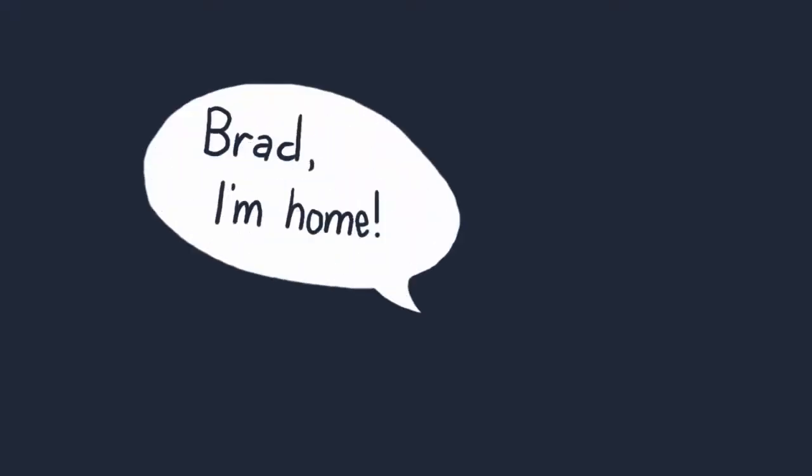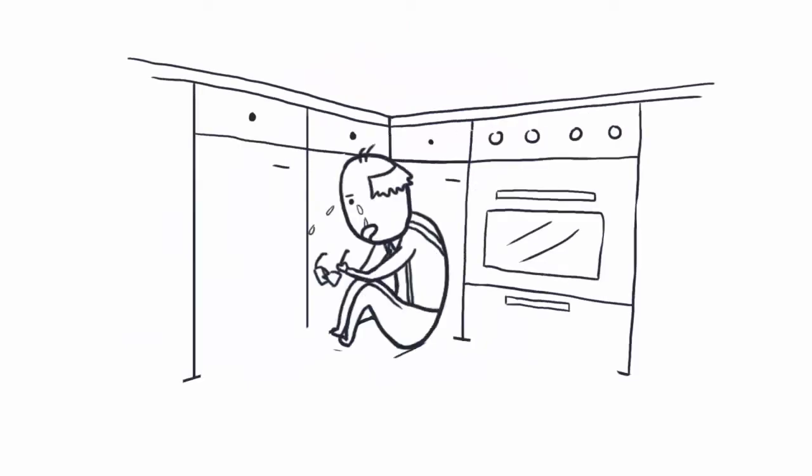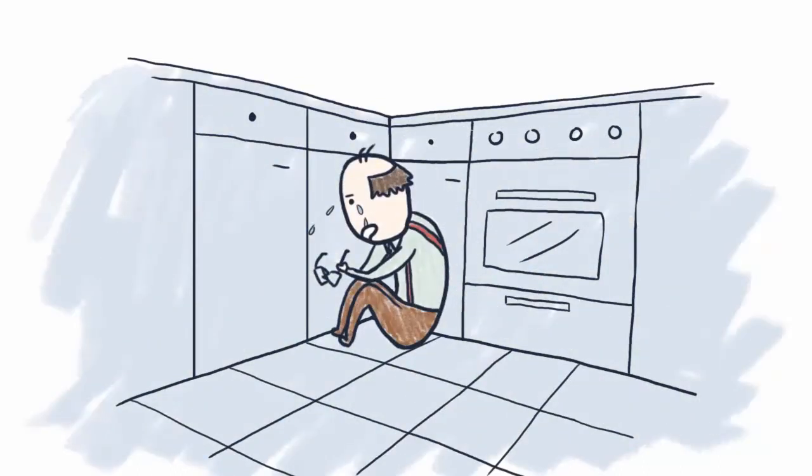Hours later, Brad, I'm home, his wife Anne calls out. Instead of finding Brad in his normal spot, Anne finds him sitting on the floor. Crying, confused, and drawn up on the right side, Brad speaks: Anne, I can't see.